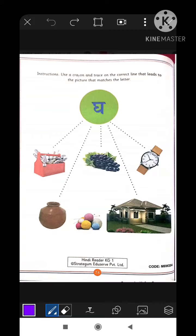And if the object begins with Gha, we are going to trace the dotted line. We have an extra picture that is of the yard. Now let us begin.